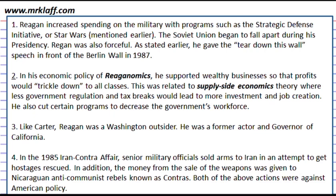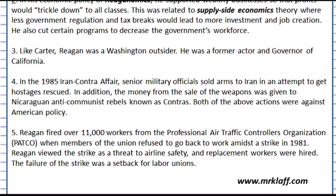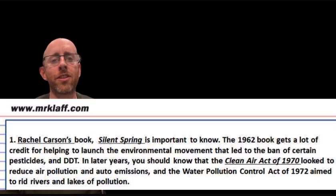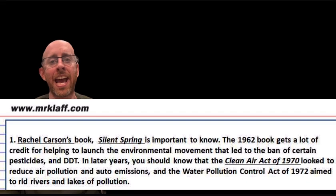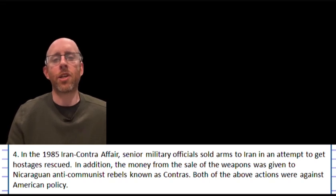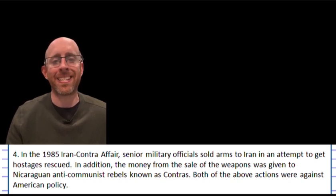Ronald Reagan, a Washington outsider as a governor and former actor, also didn't help labor much as he broke up the air traffic controllers strike. In addition, he cut a lot of jobs at the EPA, or the Environmental Protection Agency. Speaking of the environment, there's a lot happening during this entire period as we see the beginning of an environmental movement. It starts in 1962, when Rachel Carson wrote the famous book Silent Spring, which helped lead to the end of chemical pesticides such as DDT. Shortly after, we have the Clean Water Act, the Endangered Species Act, and the Clean Air Act. The dark cloud over the Reagan administration was the Iran-Contra scandal, where the U.S. government secretly sold weapons to Iran, and the money was funneled to anti-communists in Nicaragua. Reagan escaped any wrongdoing in this scandal.